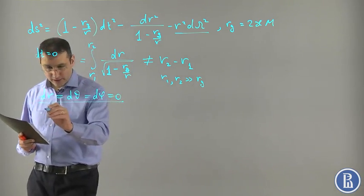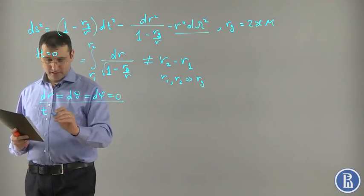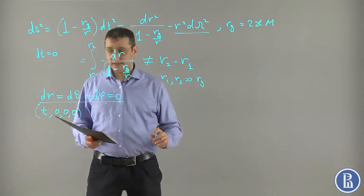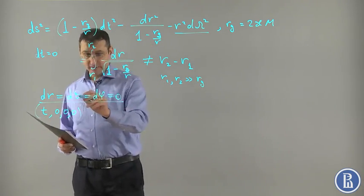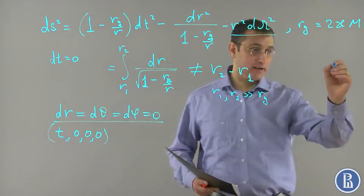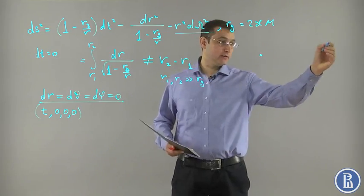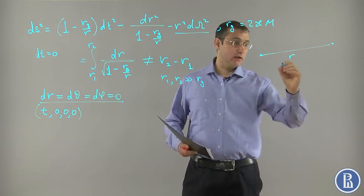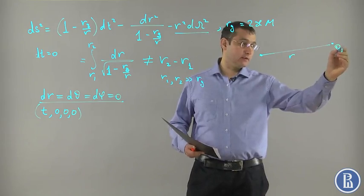Static observers of this metric, their world lines are just T, zero, zero, zero. They are fixed at the given radius and at the given angles over the gravitating center. So there is a gravitating center and these guys are fixed at the given radius and given theta and phi.